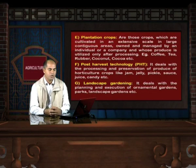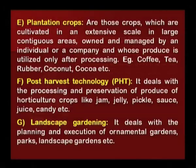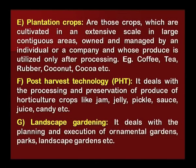Plantation crops are those crops cultivated on an extensive scale in large contiguous areas, owned and managed by an individual or company, and whose produce is utilized only after processing. Examples are coffee, tea, rubber, coconut, cocoa, etc. Post-harvest technology deals with the processing and preservation of produce of horticulture crops — like jam, jelly, pickle, sauce, juice, candy, etc.